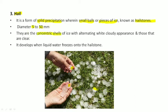There are the concentric shells, like the concentric shells of ice with alternating white cloudy appearance and those that are clear. It develops when liquid water freezes onto the hailstones.